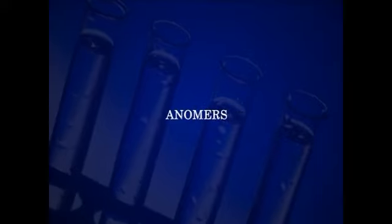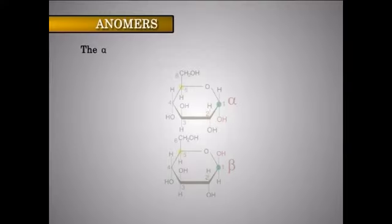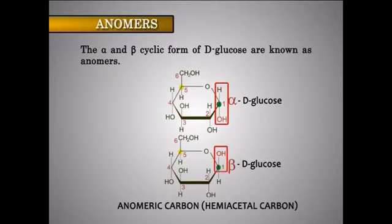Anomers. The alpha and beta cyclic forms of D-glucose are known as anomers. They differ from each other in the configuration only around carbon-1, known as the anomeric carbon, that is the hemiacetal carbon.